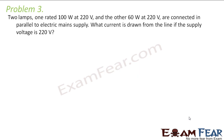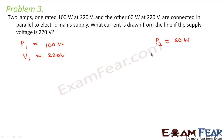Here comes problem 3 which says: two lamps, one rated 100 watts at 220 volts and the other 60 watts at 220 volts, are connected in parallel to electric mains supply. So P1 for the first lamp is 100 watts, and for the second lamp power is 60 watts. The potential difference for both is 220 volts. They are both connected in parallel to electric mains supply.